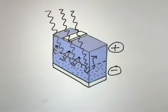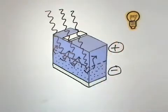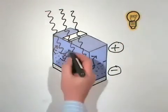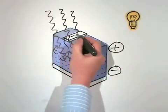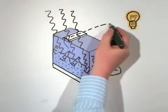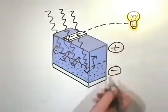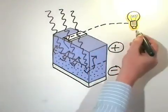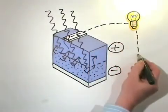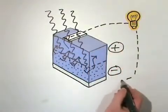The direction they move in depends on how the circuit has been set up. So now we have a flow of electrons — in other words, electricity. We can harness the electricity by incorporating something we want to run, such as a light bulb, into the circuit. Or we can place a battery in the circuit and store the electricity.